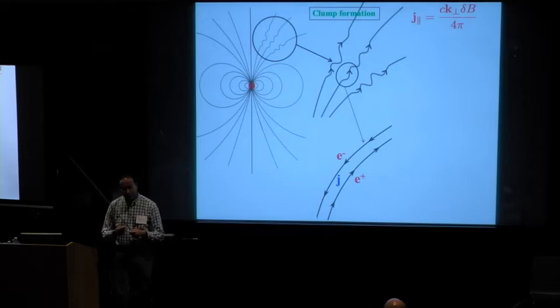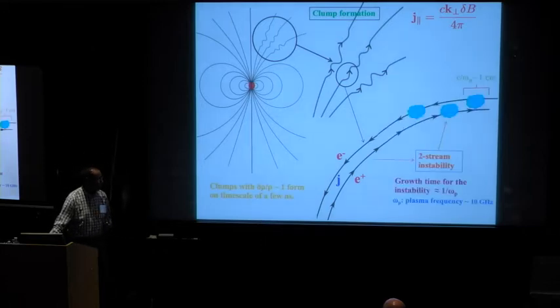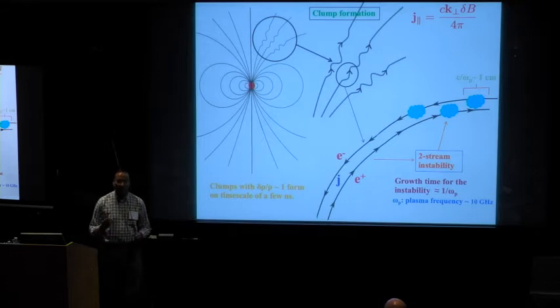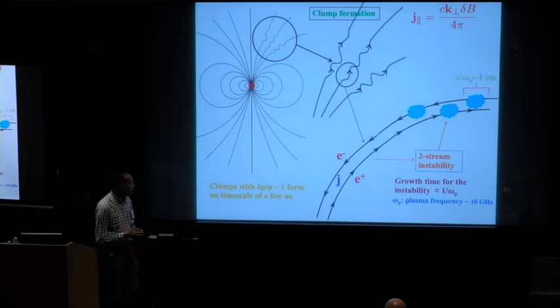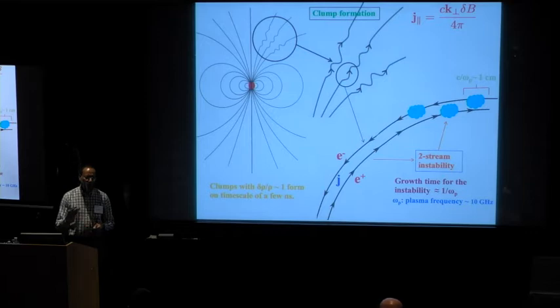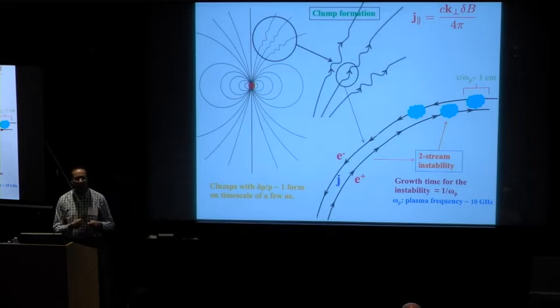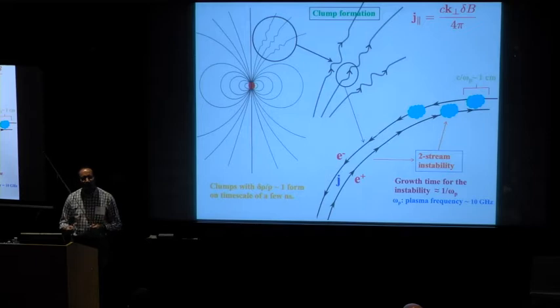And so these counter-streaming particles are subjected to extreme instability. That instability grows on the plasma time scale, which means it grows on the time scale of nanoseconds or so. And in few tens of nanoseconds, you have formation of clumps with delta rho over rho of order unity. So the Alfvén wave provides a way to answer that question of how clumps form in the antenna mechanism for radio pulsars.